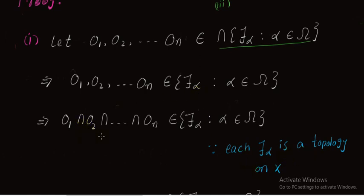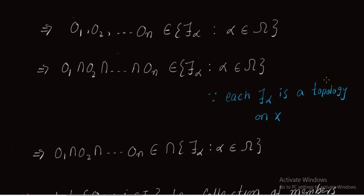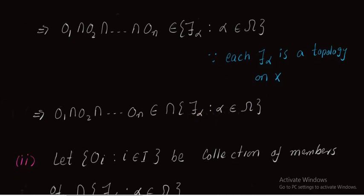Each τ_α satisfies the conditions of a topology. So we can write that the intersection of these n elements belongs to each τ_α (α ∈ Ω). From here we can write that O₁ ∩ O₂ ∩ ... ∩ Oₙ belongs to the intersection τ_α (α ∈ Ω), since this intersection belongs to each τ_α, which implies it must belong to the intersection of these topologies. So the first condition for the topology is satisfied.